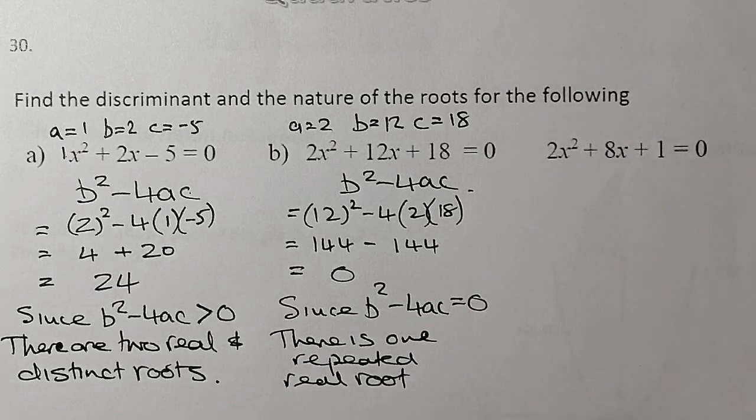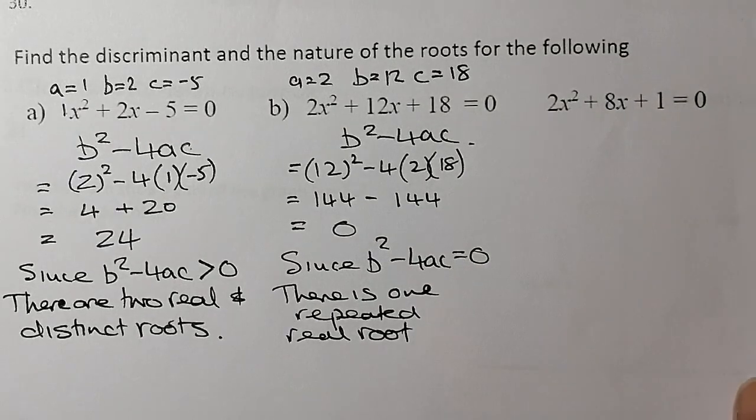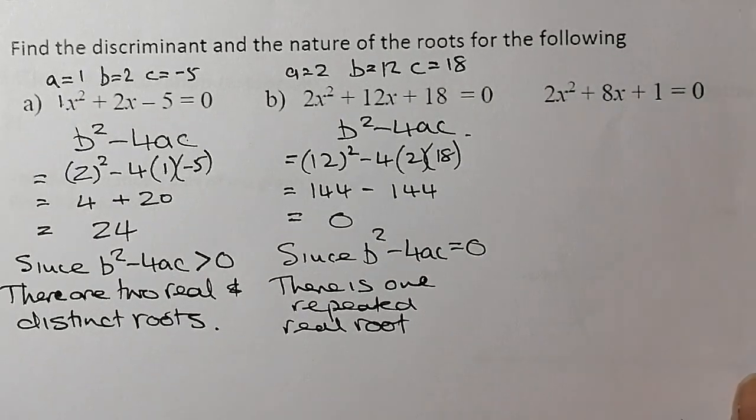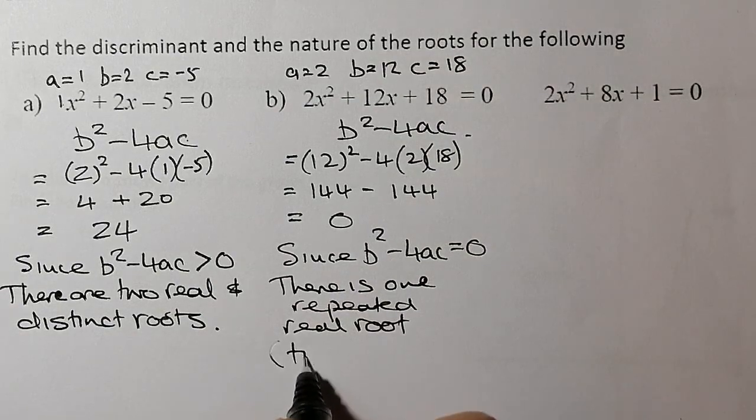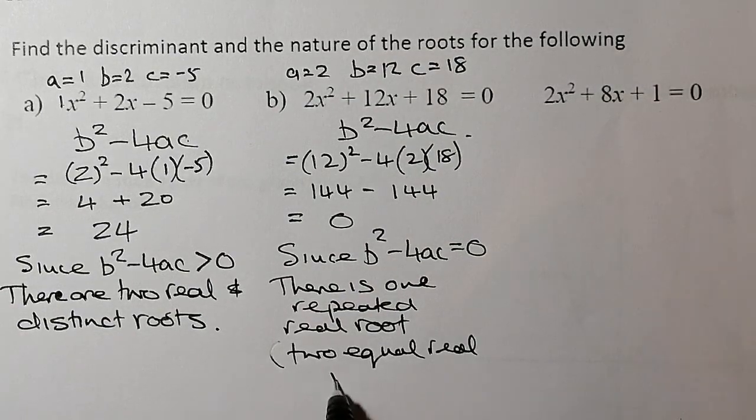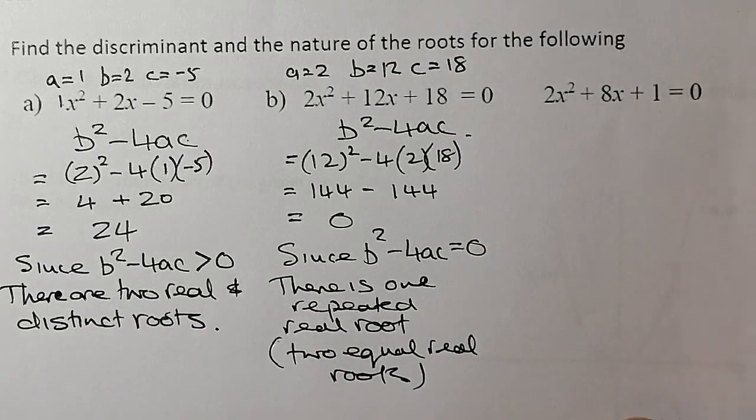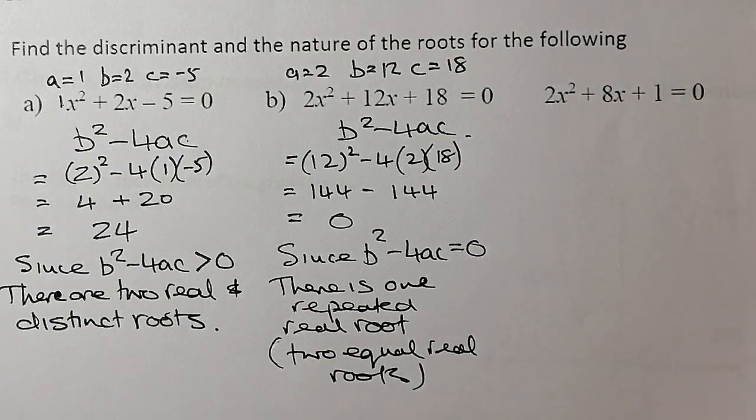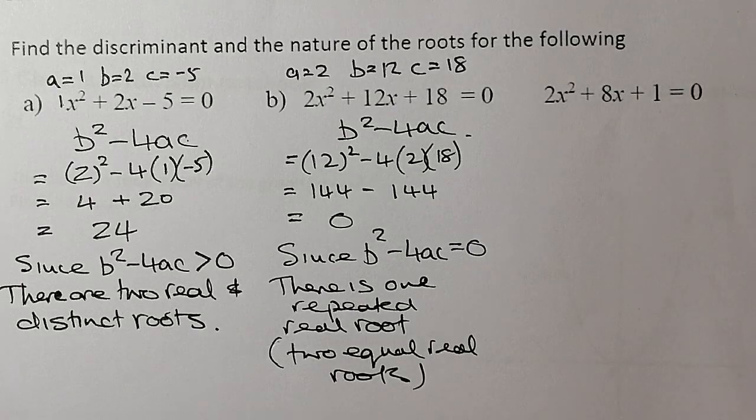Another thing that I could have stated there would be two equal real roots. That would be another option. So two equal real roots. There's an option that I would have for that one there as well. So that's what I would have if it equals 0.